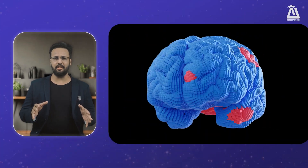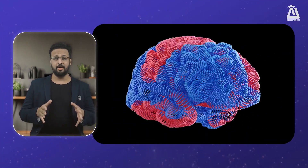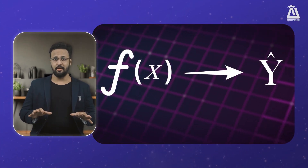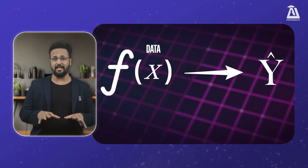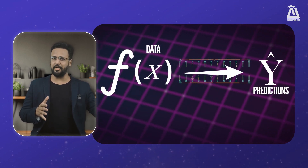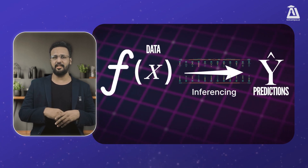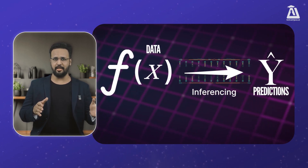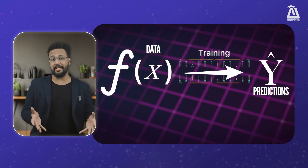At the core of it, machine learning is a function. Think of it as a super smart equation that takes data, churns through it, and spits out predictions — which we call inferencing. And the process to get there is called training.